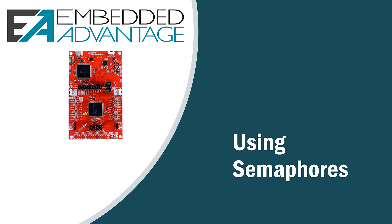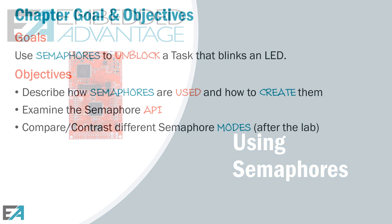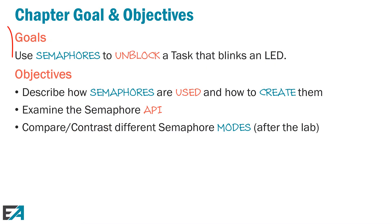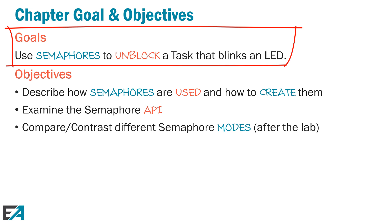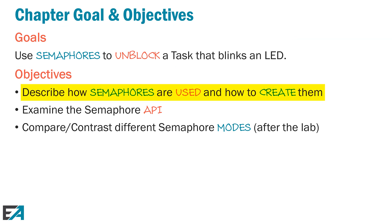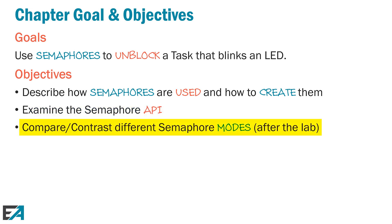Welcome to chapter nine: using semaphores. The goal of this chapter is pretty simple — what is a semaphore, how do you create one, what are some of the parameters, and how are they used to unblock tasks? The objectives are to describe what a semaphore is, and there are two basic API calls: post and pend. We'll also compare and contrast the different types of semaphores — FIFO versus priority-based, as well as counting versus binary — and we're going to look at those after the lab.